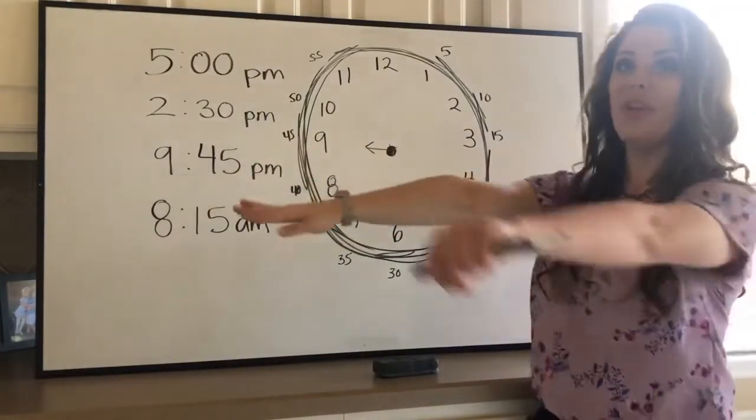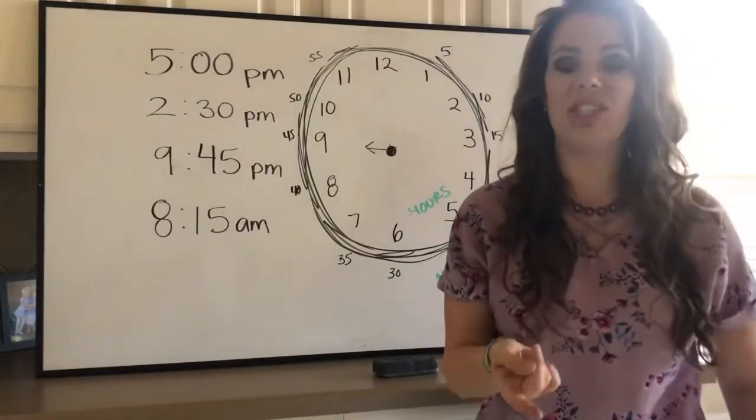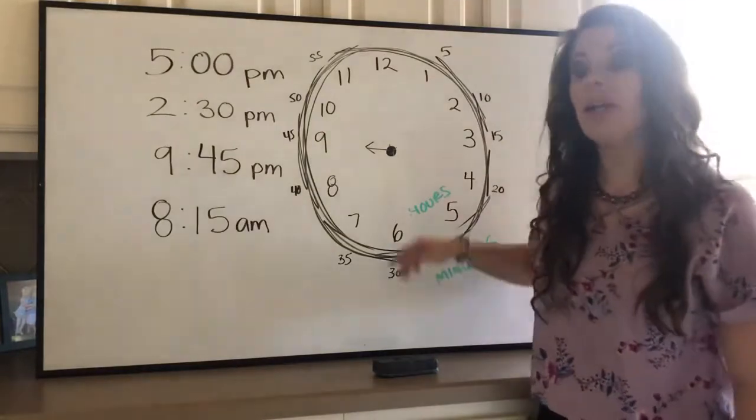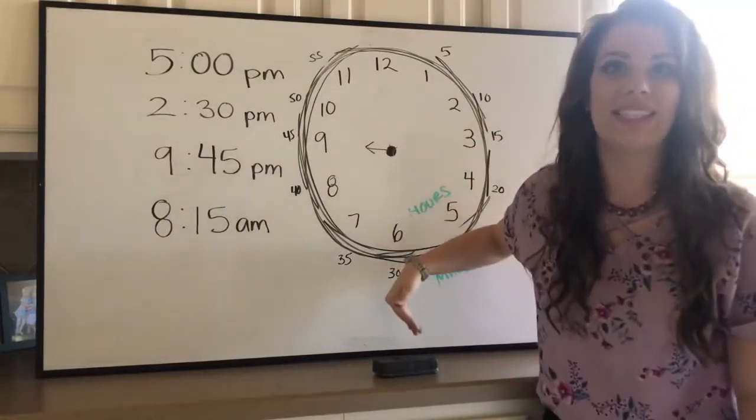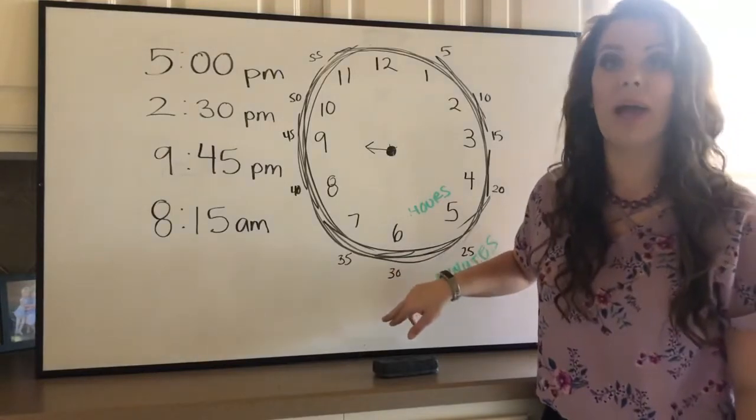So 9:45, both hands are facing the same direction. Hey, you know what I just thought of? The easy way too, if I know that the arrow going all the way straight down is 30 minutes, I can just skip count by five starting at my 30.